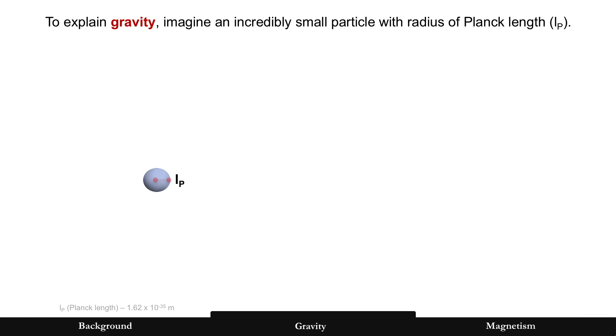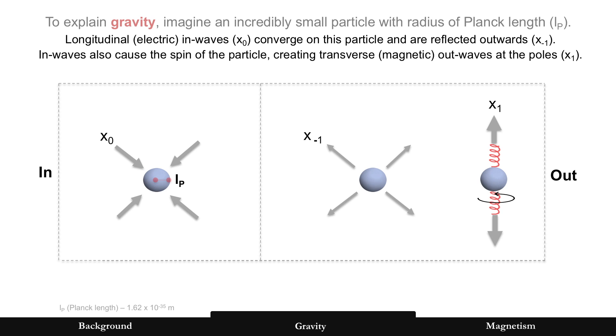All right, let's break this down and explain gravity first. To explain it, let's imagine an incredibly small particle with radius of Planck length, and that's very small. You can see the number down there, very bottom. In fact, all of the constants you're going to see here will appear at the bottom with their value and units.